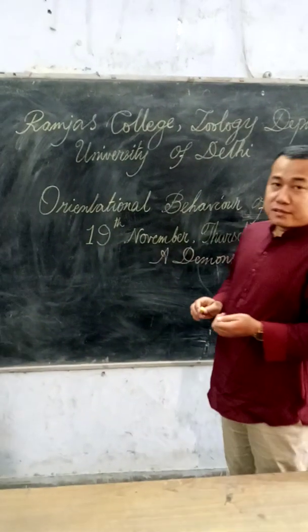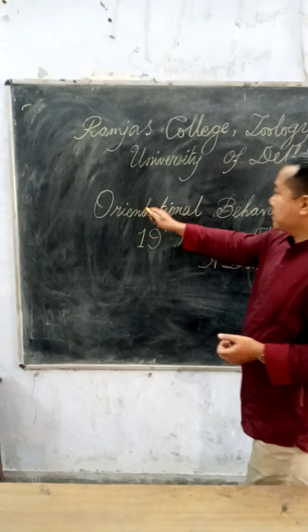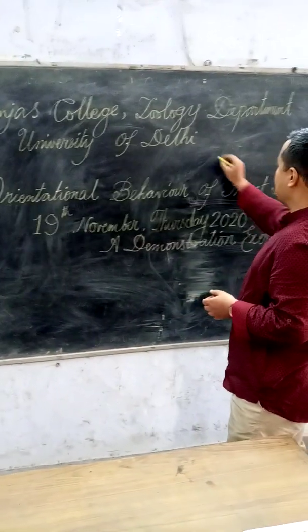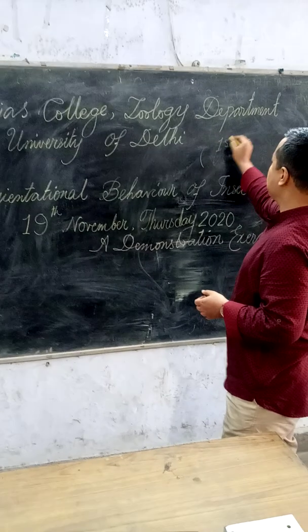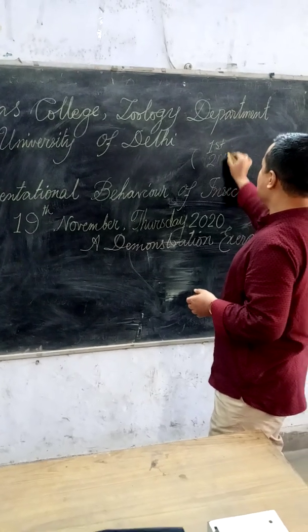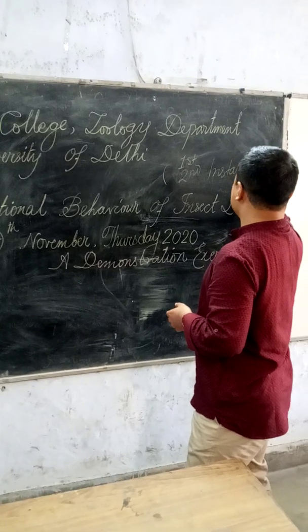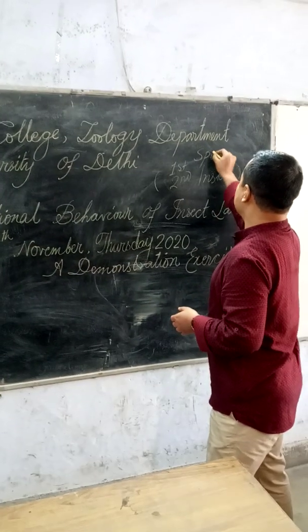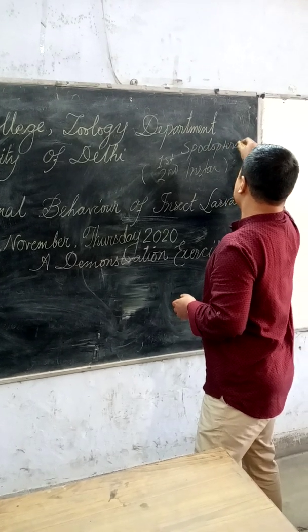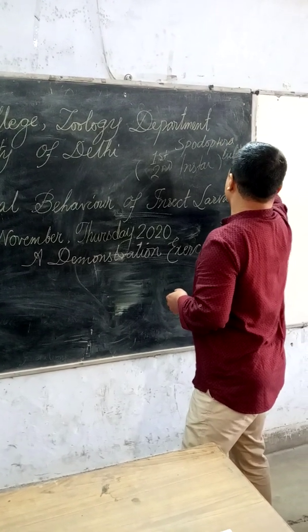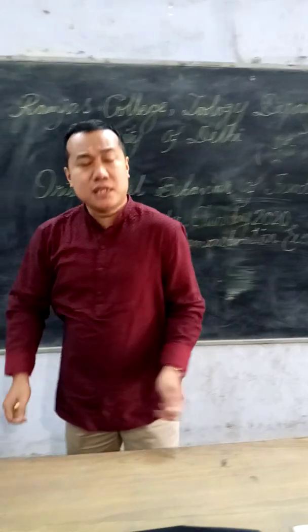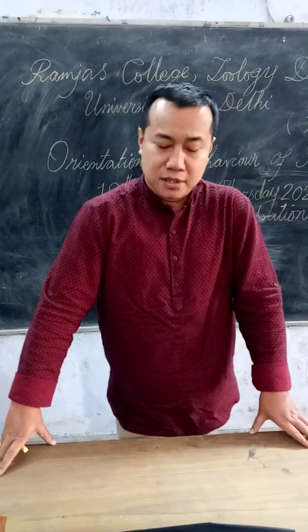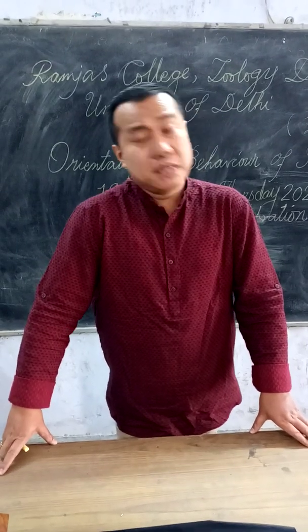The interesting exercise we are going to do is orientational behavior of insect larvae. This particular larva will most preferably be the first instar or second instar larva of an insect called Spodoptera litura. This insect is a very important pest on many agricultural crops in India and in many parts of the world.